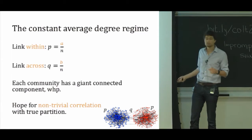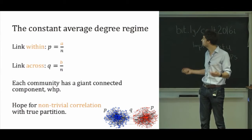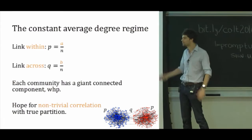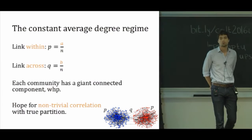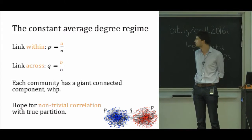But what is still true is that each of these communities individually is going to have a giant connected component, where we say that it's giant because its size grows linearly in N. And this says that it should be possible to say something non-trivial about the partition, in the sense that we should be able to do better than random, essentially. Not get the colors quite right, but say something that's better than random.